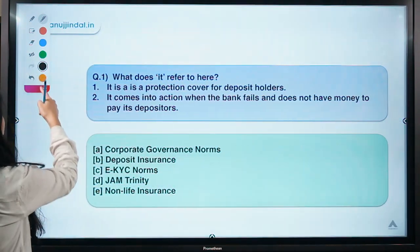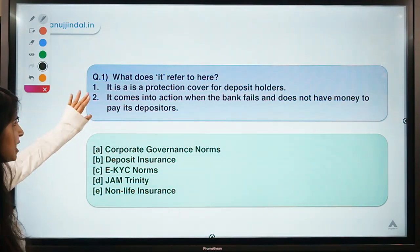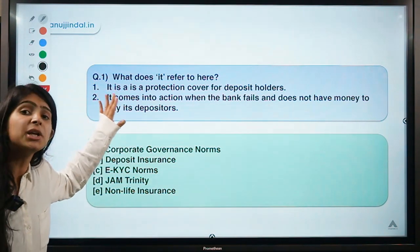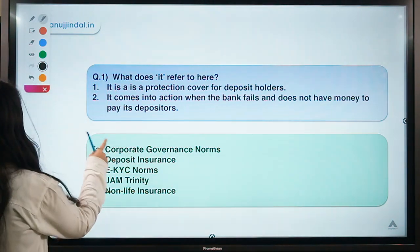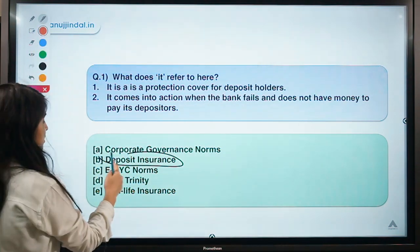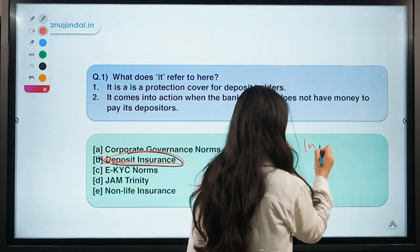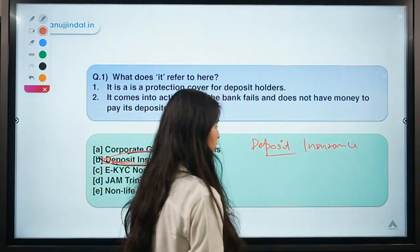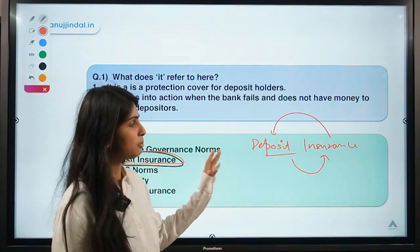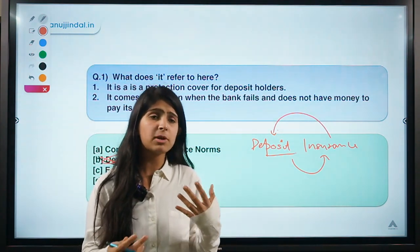Question number one asks: what does 'it' refer to? Two statements are given and you have to select the correct one. The correct option is Option B — deposit insurance. The word 'it' here refers to deposit insurance, meaning whatever you are depositing into your account is getting insured somehow.